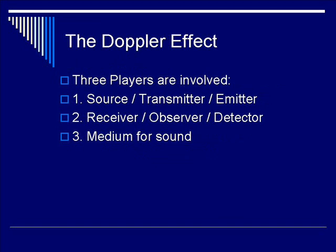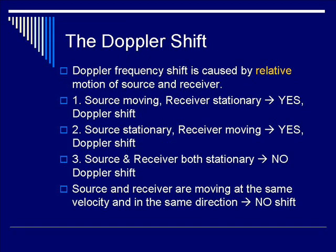Three players are involved: you need a medium for sound transmission, a source, and a receiver. You will get a Doppler Shift if a source and receiver are moving in opposite directions, or if one is moving and one is stationary. You will have no Doppler Shift if both source and receiver are stationary, or if they're moving in the same direction at the same speed.